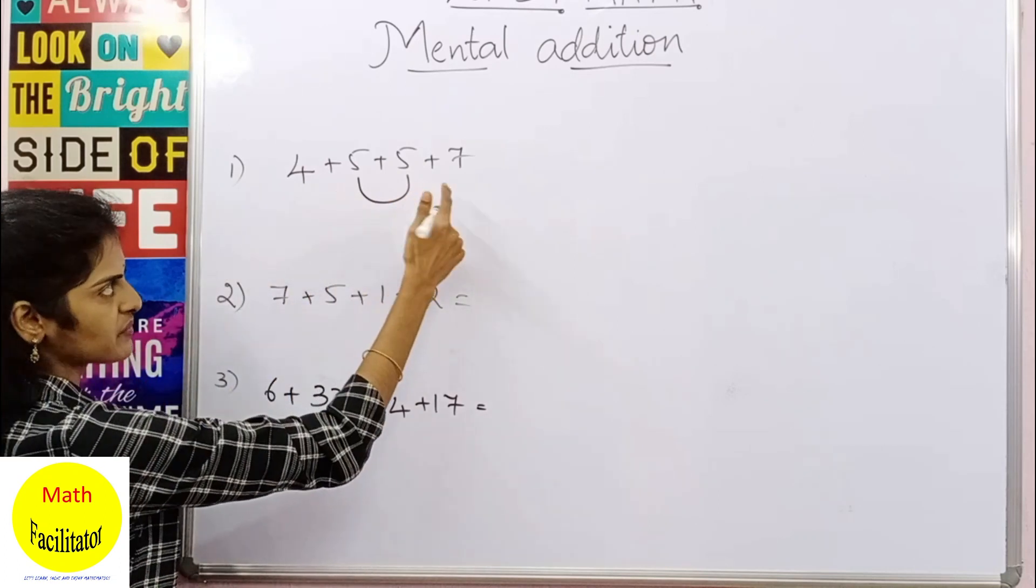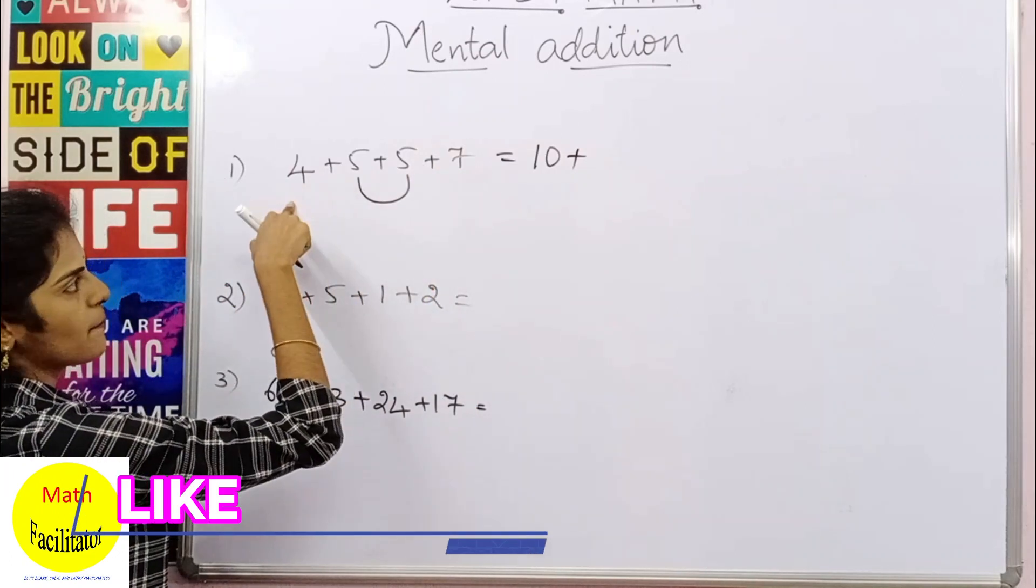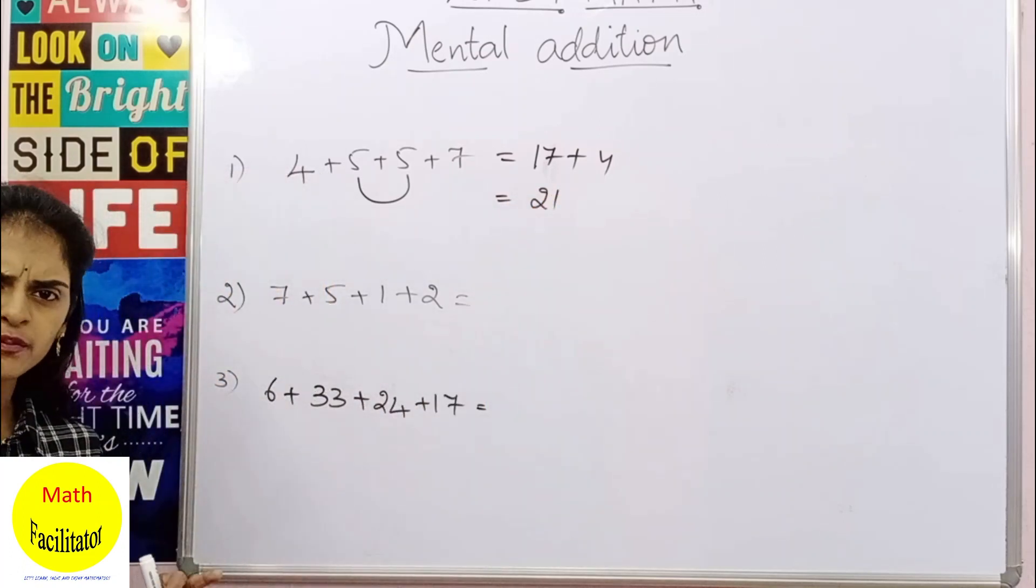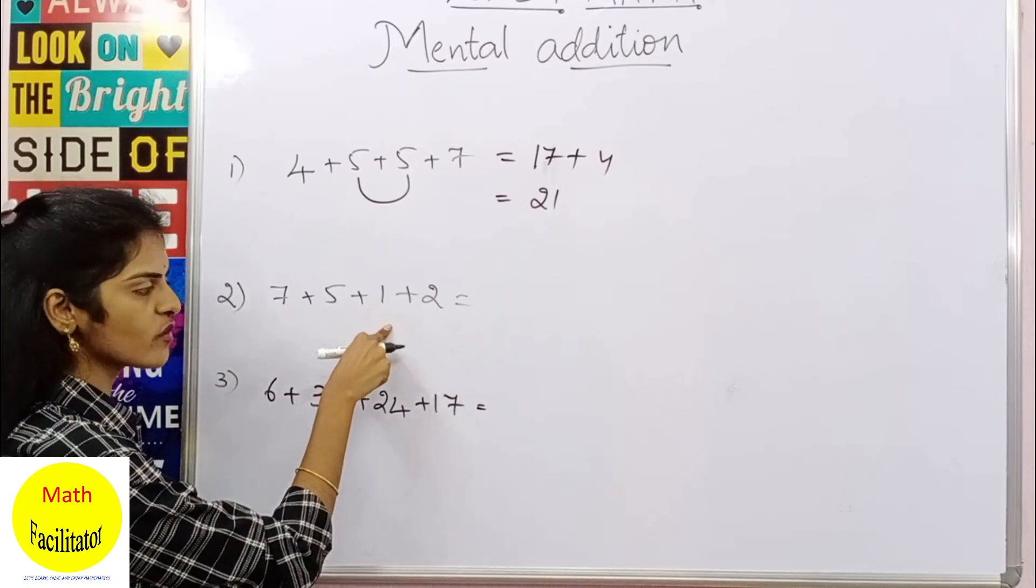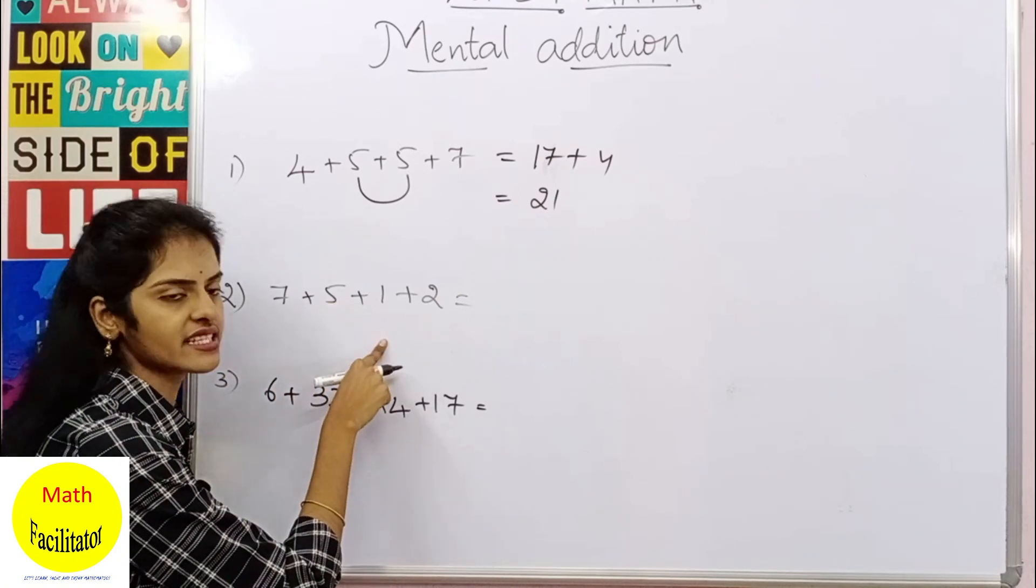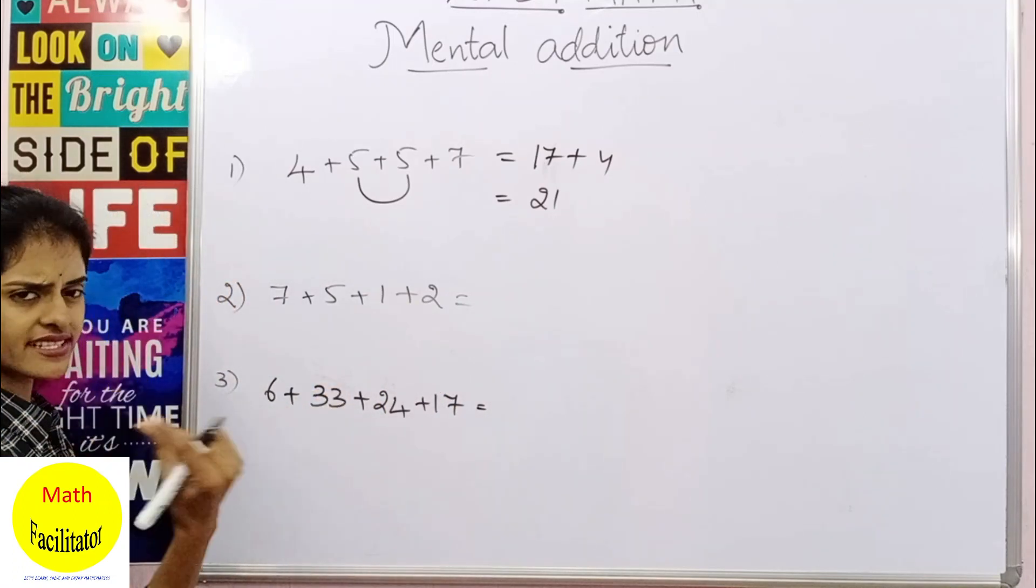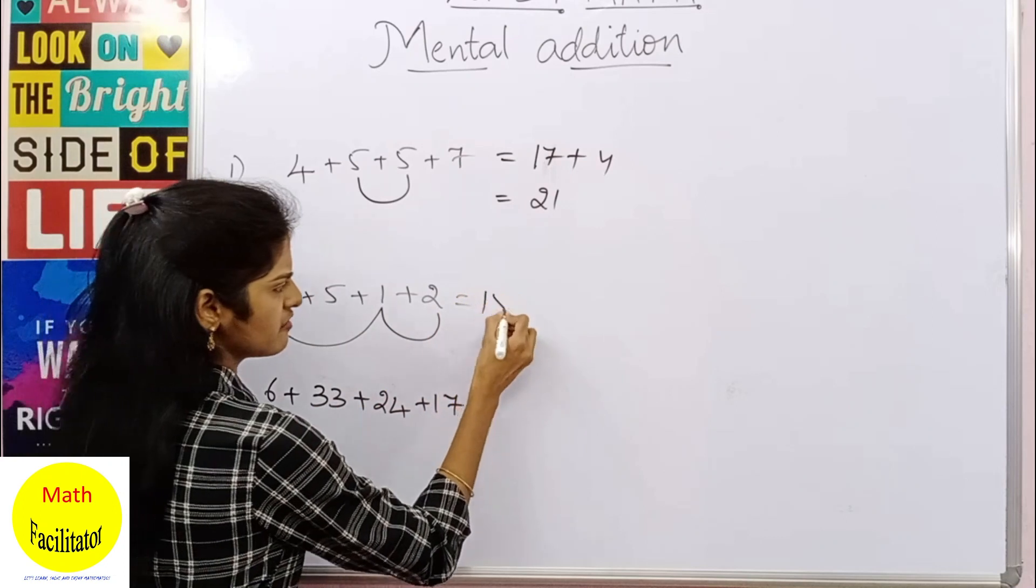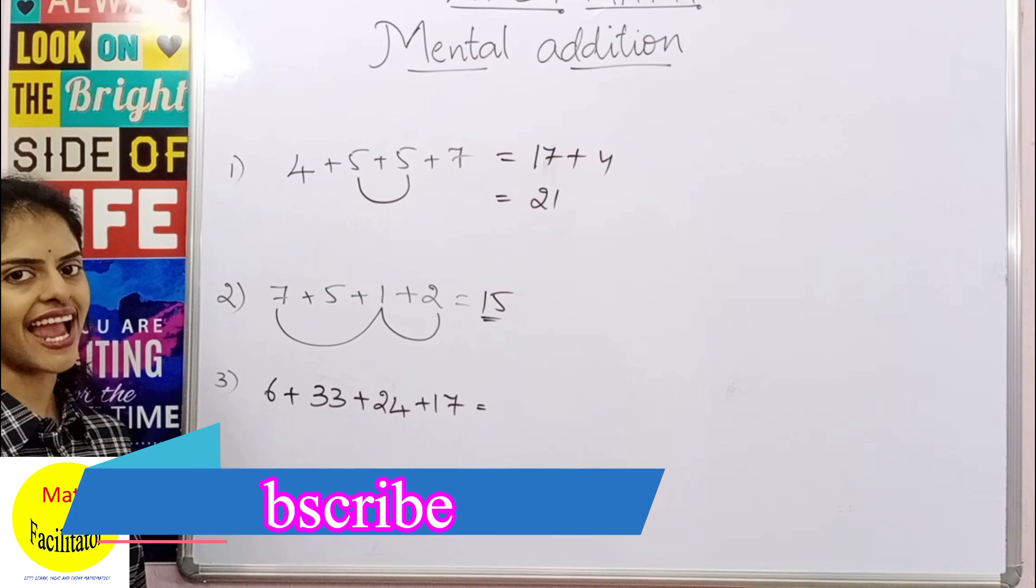Now if you just see, 5 plus 5 is 10, so we'll firstly add 5 plus 5, so this is 10. So 5 plus 5 is 10 plus 7 is 17 plus 4, so you can simply write as 17 plus 4 which is nothing but 21. Very simple, it will be even more easier with practice. Now just look at the second one, 7 plus 5 plus 1 plus 2. We used to add 7 plus 5 is 12, 12 plus 1 is 13, 13 plus 2 is 15, yes. But now the simplest method is, by just observing, you can see that 7 plus 1 plus 2 is nothing but 10, and 10 plus 5 is 15. So no writing of any steps, very quickly you can just add in your mind.